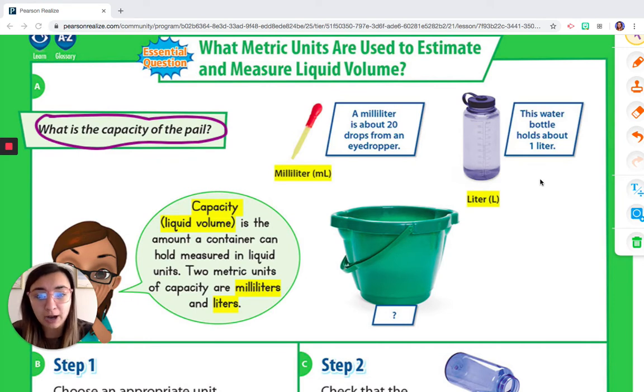And our other measurement to measure liquid is called a liter. And it says this water bottle holds about one liter. So that is a lot of water. Usually a liter is about as big as a soda bottle, one of those family size soda bottles. That's usually a liter. So that's a lot of water or a lot of liquid.